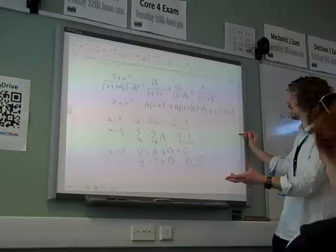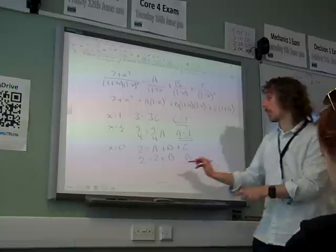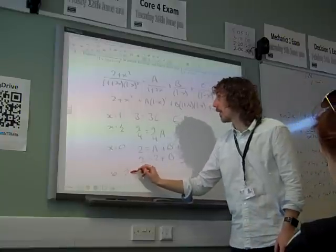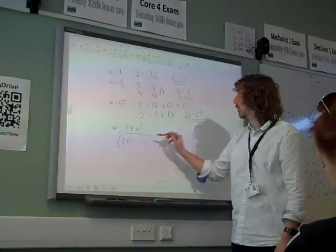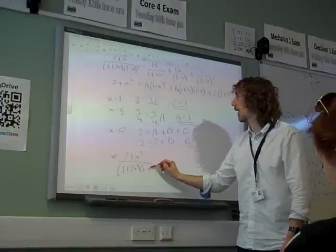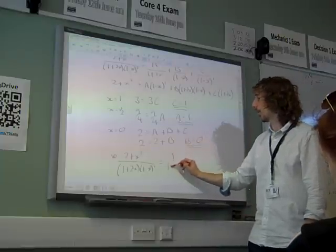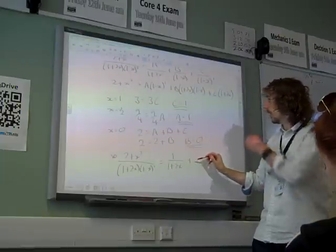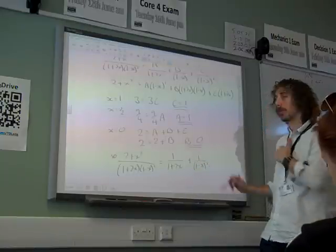So our thing that we're dealing with now, it did say express it in partial fractions, so we ought to finish this off. 2 plus x squared over 1 plus 2x, 1 minus x squared is 1 over 1 plus 2x plus 1 over 1 minus x squared.